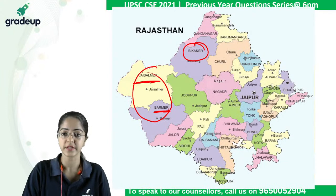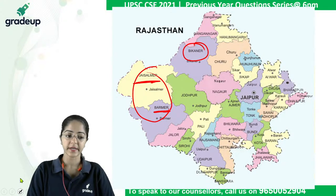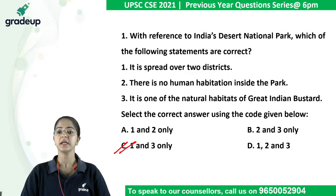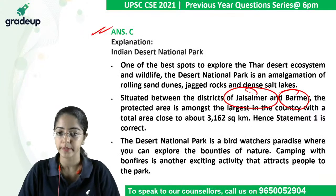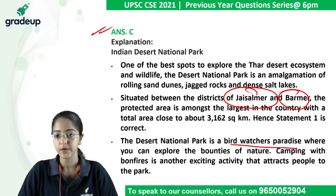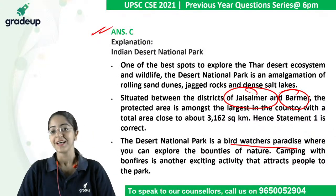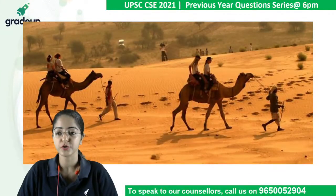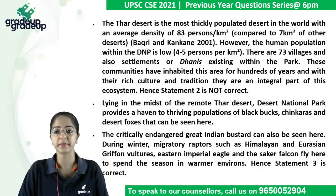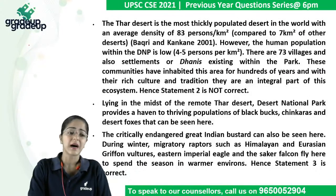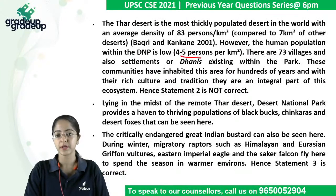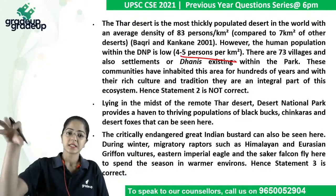Jaisalmer and Barmer are the two districts — part of the Thar Desert, also called the Great Indian Desert, a hot desert. The second statement about no human habitation is incorrect. The third statement is right — it is one of the natural habitats of the Great Indian Bustard. Desert National Park is a birdwatcher's paradise. There are many travelers and different tribes living here, so there is human habitation, but it is very scarcely distributed — about four to five persons per square kilometer.